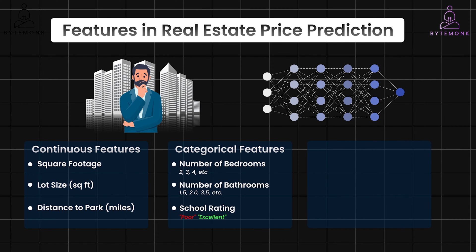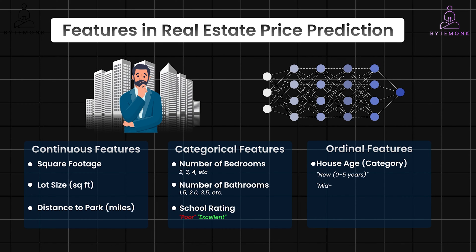And finally, we have ordinal features, which represent categories with a specific order or ranking. For example, house age could be one of the categories. You might group houses into categories like new, which is 0 to 5 years; mid-age, maybe 6 to 20 years; or older, which is 21 plus years.